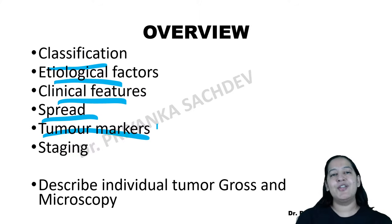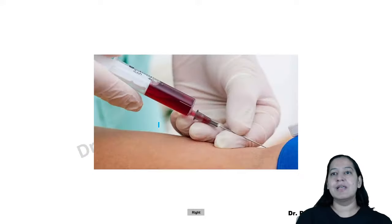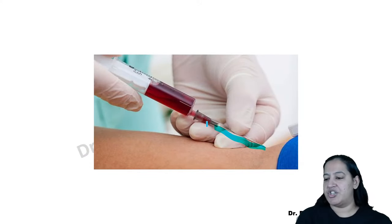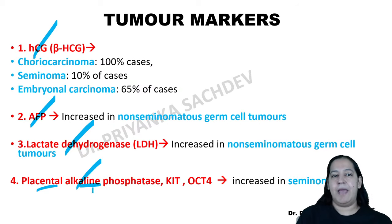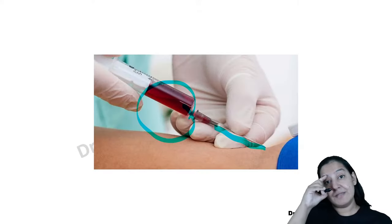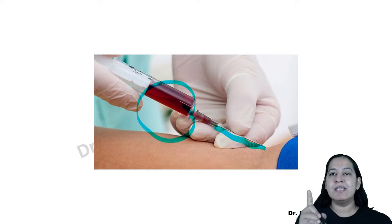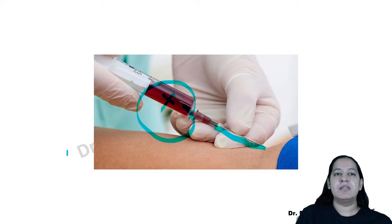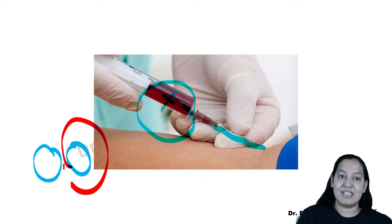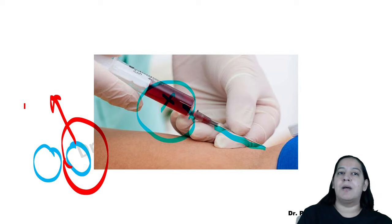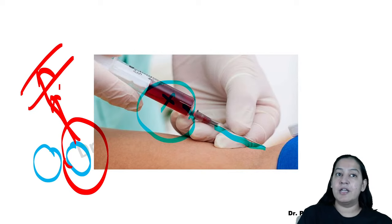Tumor markers: we withdraw a blood sample from the patient and look for these proteins — beta-HCG, alpha-fetoprotein (AFP), LDH (lactate dehydrogenase), and PLAP (placental alkaline phosphatase). Normally these are not in the blood, but a tumor in the testis secretes them. This is a simple, non-invasive test. Seminoma markers are PLAP, KIT, and OCT4. Non-seminoma markers are AFP, beta-HCG, and LDH.